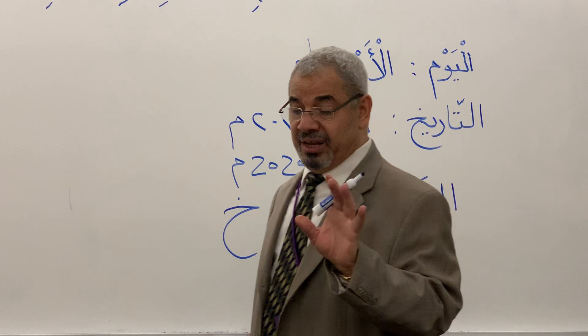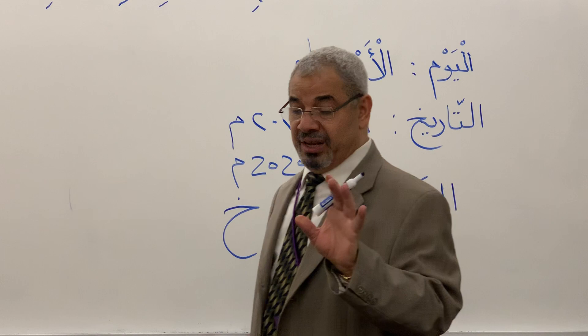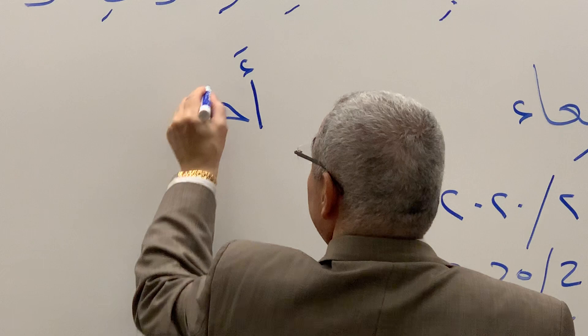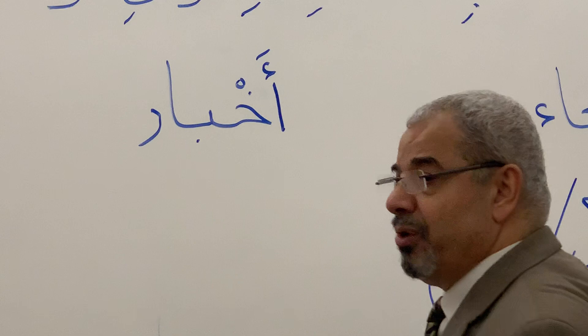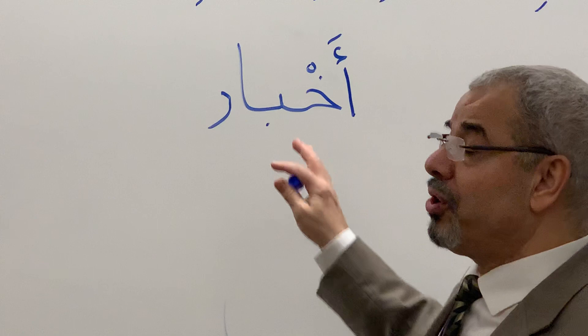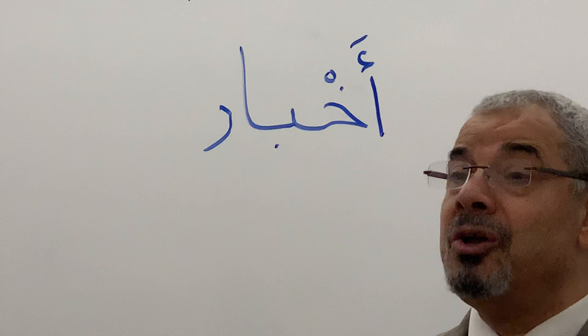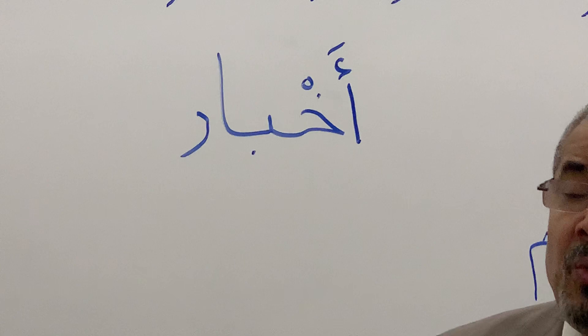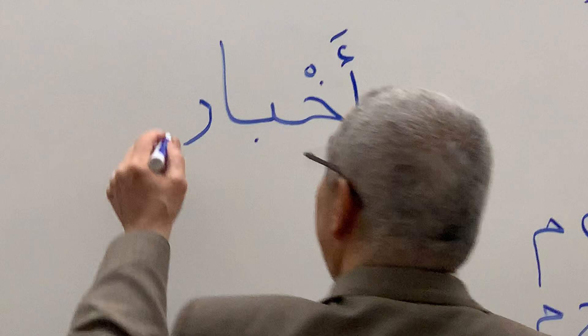Last week we took Kha in the beginning. Now we're going to take it in the middle. In the middle I have these words — for example: Aleph, Hamza, Fatha, Kha, Sukoon, Ba, Aleph, Re — Akhbar. Say Akhbar. Akhbar is news. Don't mix between Akhbar and Akhbar. Akhbar means news. In Arabic, news can be both plural and singular — one piece of news. The letter Kha is in the middle here.